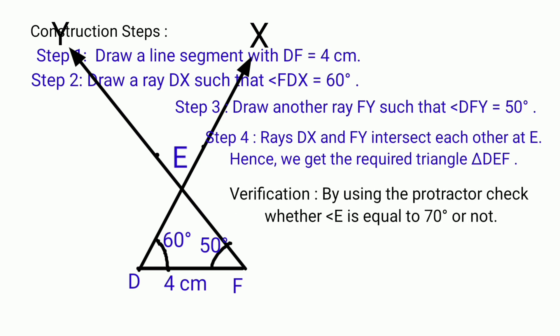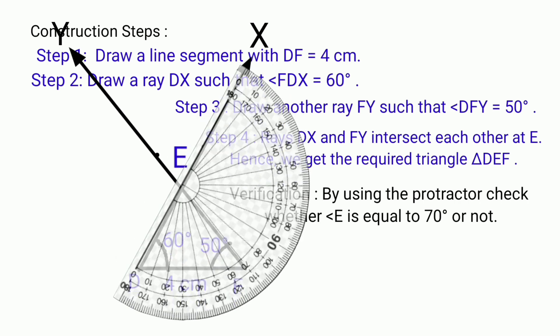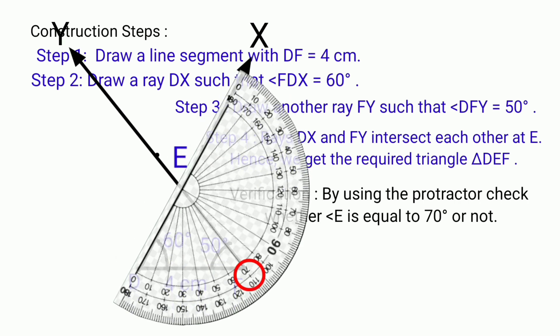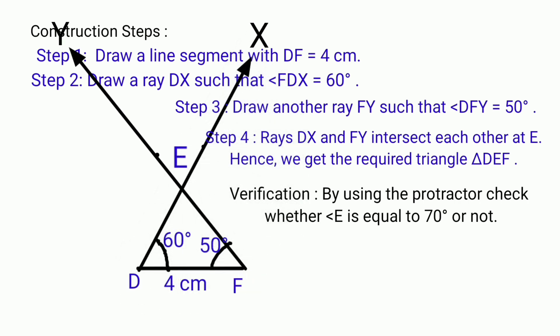Verification: By using the protractor, check whether angle E is equal to 70 degrees or not.